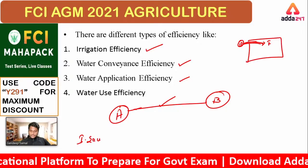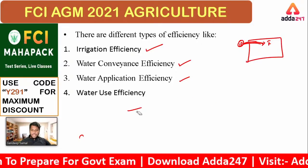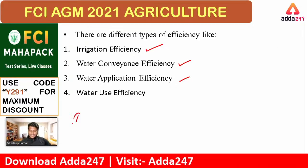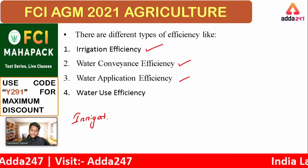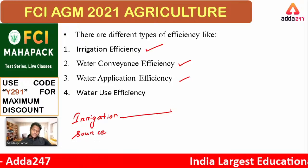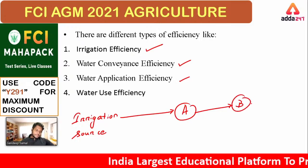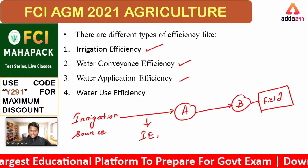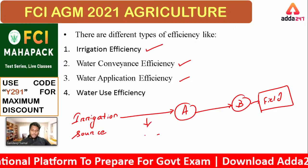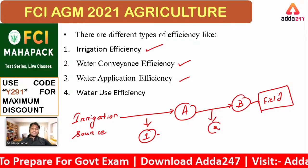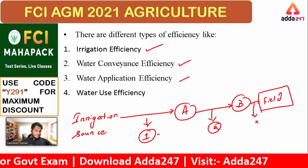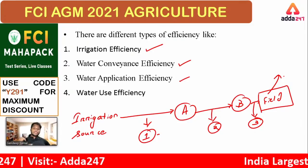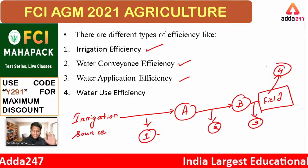From the irrigation source to point A to point B to the field: irrigation efficiency covers the overall process; water conveyance efficiency is from one point to another; water application efficiency is from point B to the field; and finally, the water that has been applied in the field — how much of that water is actually being used by the plants — that is the water use efficiency. Does everyone understand?